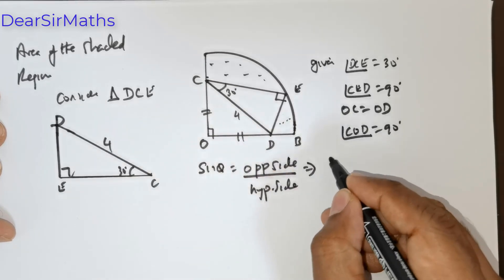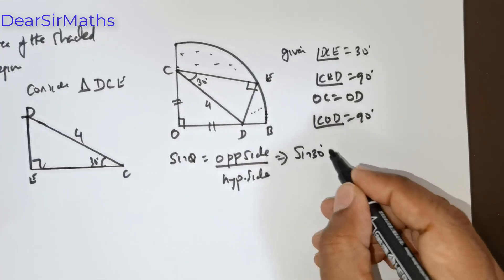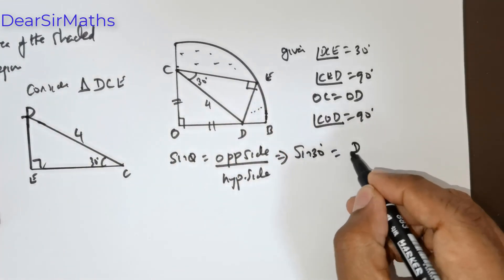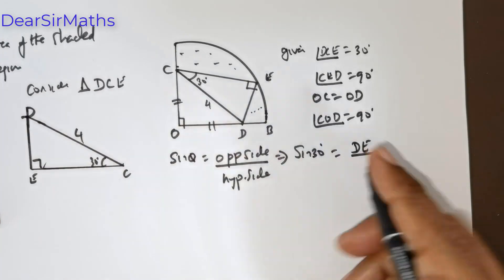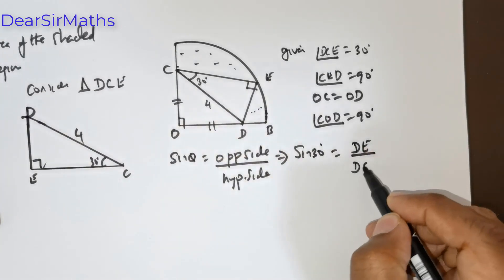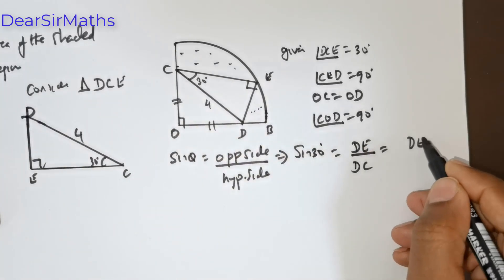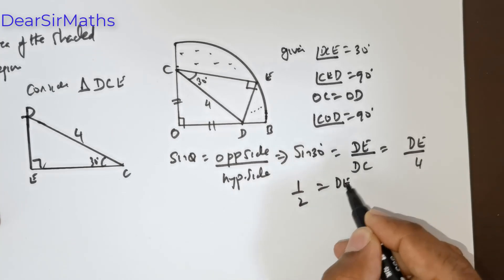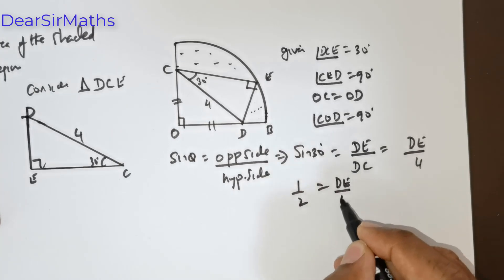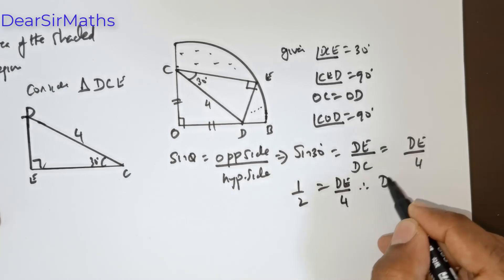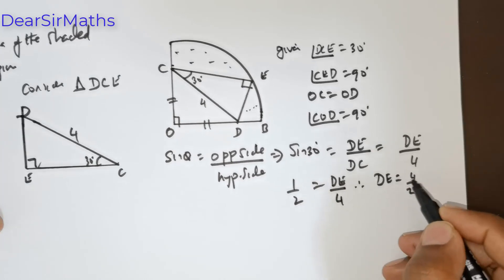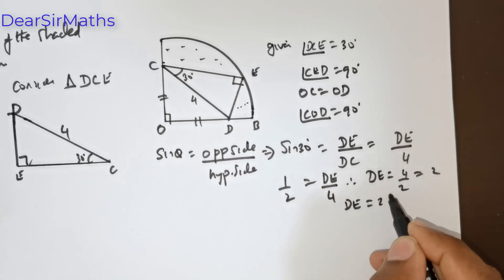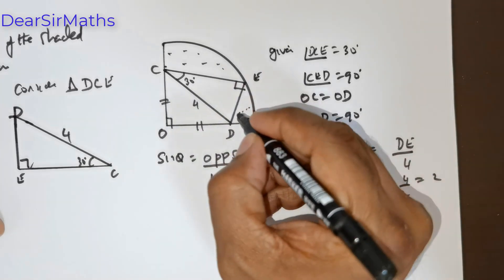I would like to take sine theta, which is opposite side divided by hypotenuse. So sine 30 is equal to DE divided by DC. DE is unknown, DC is 4. Sine 30 is 1 over 2, so 1/2 equals DE over 4. Therefore DE equals 4 divided by 2, which means DE is 2 units.